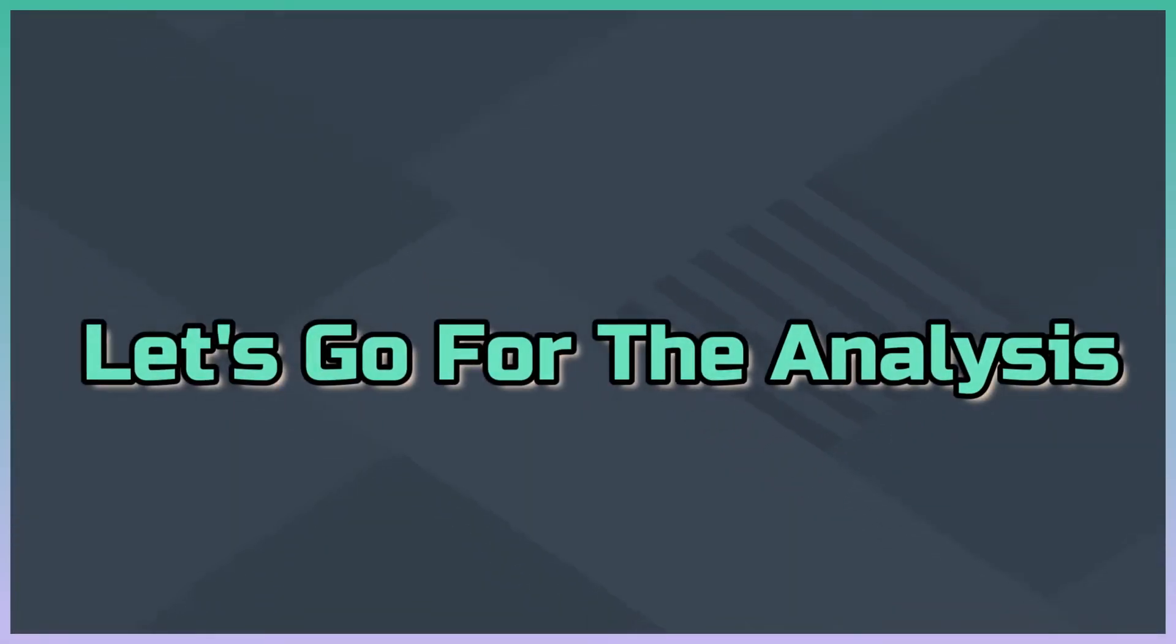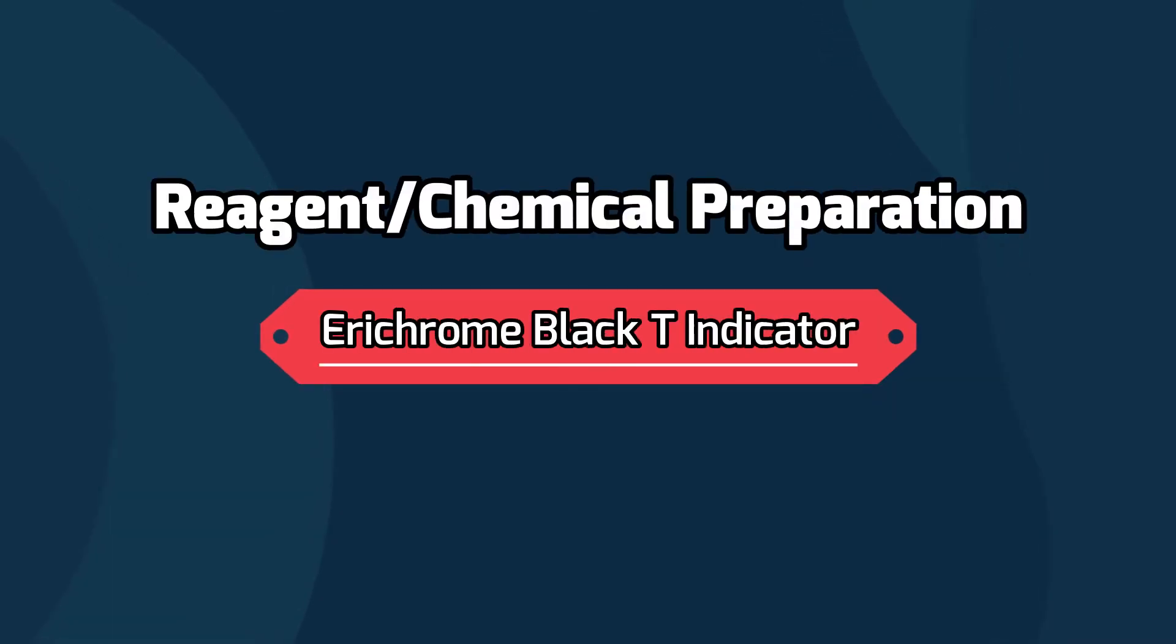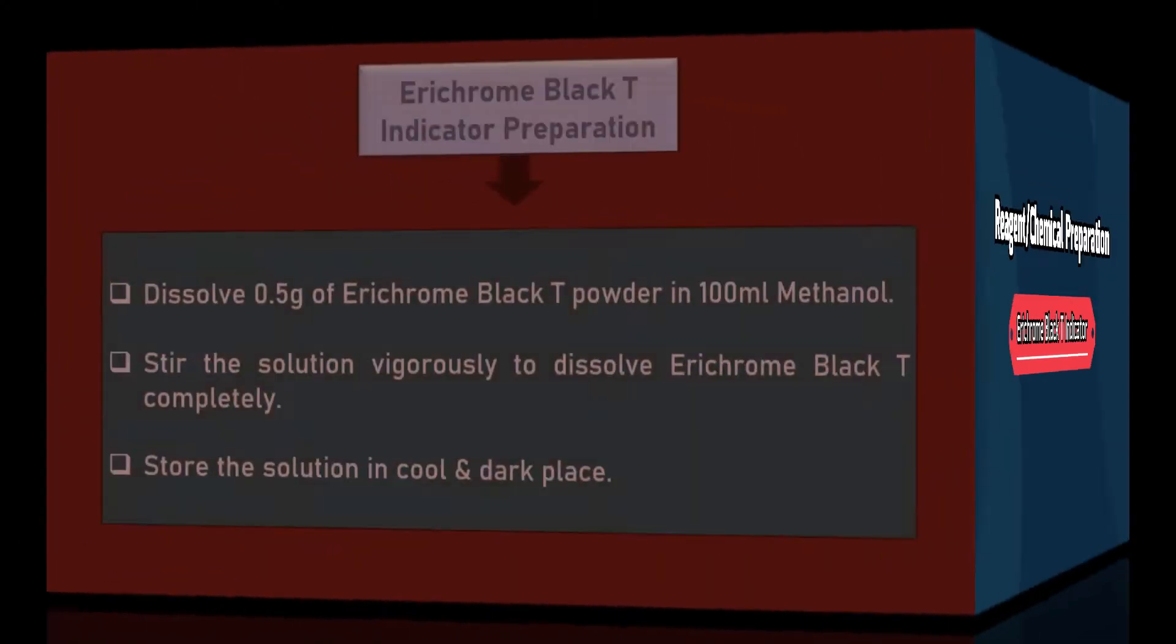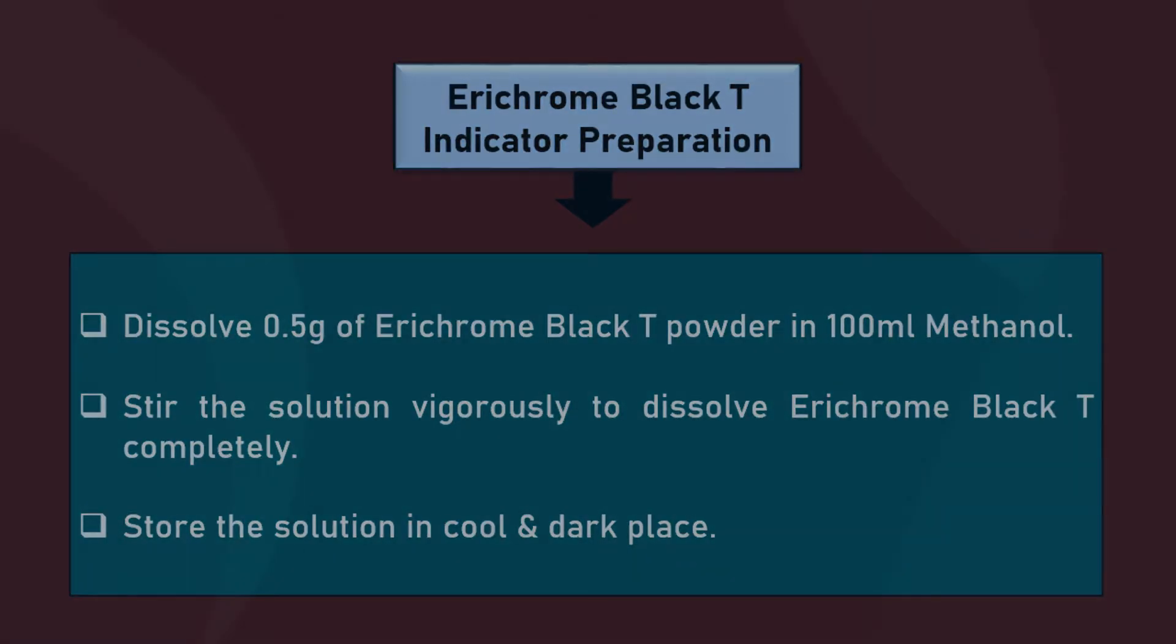Let's start the analysis. Prepare erichrome black tea indicator solution by dissolving 0.5 gram erichrome black tea powder in 100 ml methanol. Store the solution in a cool and dark place.